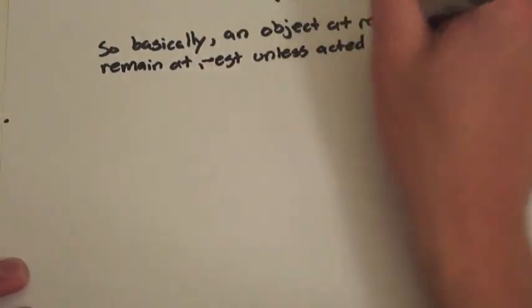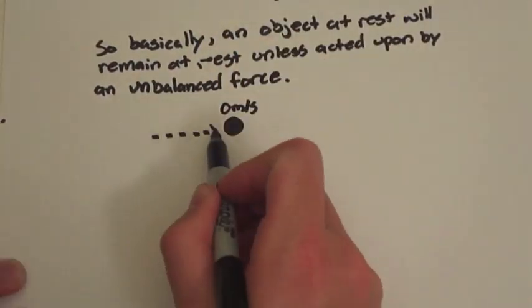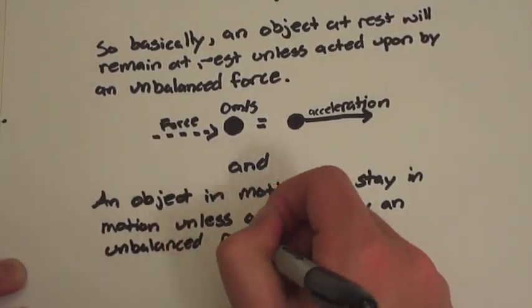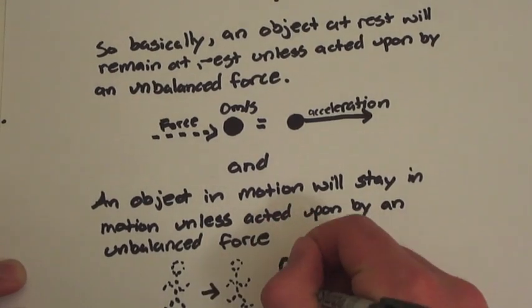Basically, an object at rest will remain at rest unless acted upon by an unbalanced force, and an object in motion will stay in motion unless acted upon by an unbalanced force.